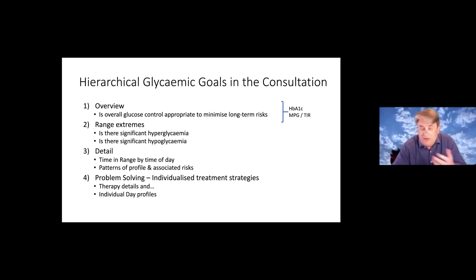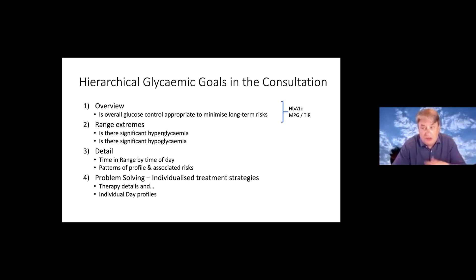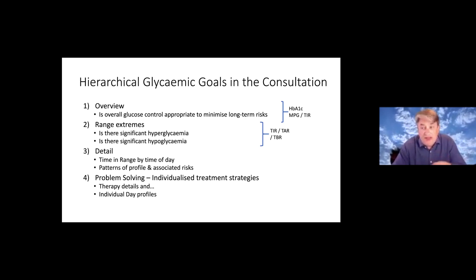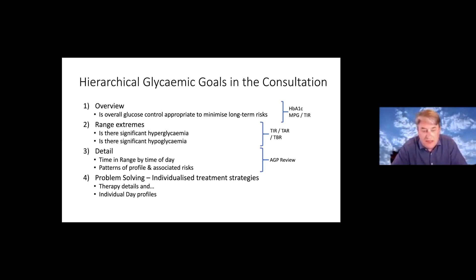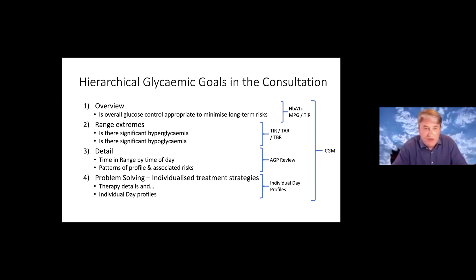When looking at the overview, we can look at haemoglobin A1c, the estimated A1c, or glucose management indicator (GMI) as we're now meant to be calling it — which is a measure of the mean plasma glucose. And of course time in range — I'm going to try not to say too much about that since there's a full tutorial coming in a week or two. When we look at extremes, we look at the range above and below target episodes. For patterns, the AGP is where it really comes into its own. And for individualised processes, we look at individual day profiles — all of which can be found from CGM data, making it very powerful.